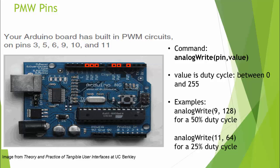The Arduino board has built-in PWM circuits on certain pins, and those are labeled for us. For those pins, we can use a new command: instead of simply telling the system that the pin is high, we use the analogWrite command, specify the pin, and then give it a value between 0 and 255. For example, 128 is approximately 50% power, and 64 would be 25% power.